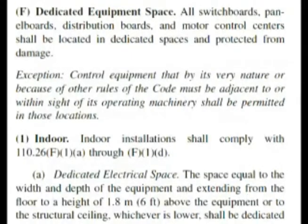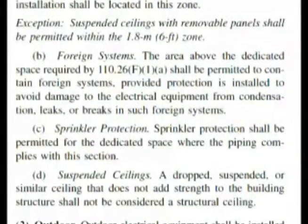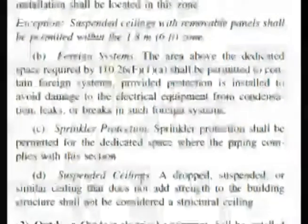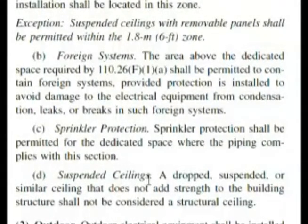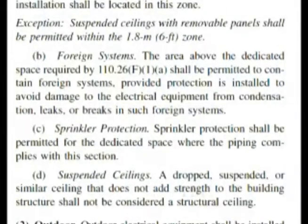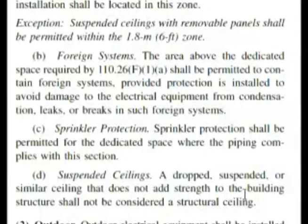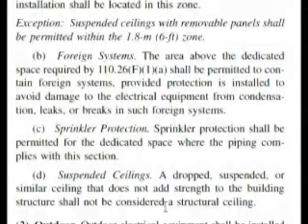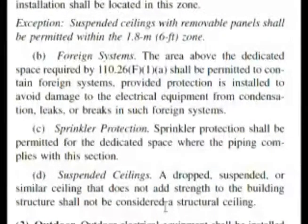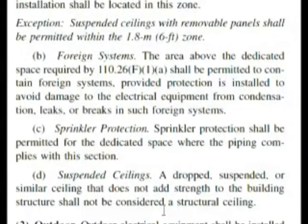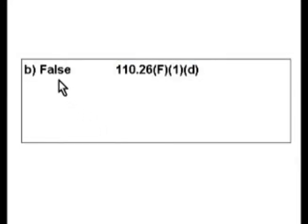We find here dedicated equipment space, and our question starts off with the dedicated space above a panel board, so this looks like a good place. Now we start going through these smaller italic headings. We find subsection D, suspended ceilings: a dropped, suspended, or similar ceiling that does not add strength to the building structure shall not be considered a structural ceiling. The statement in the question said it was considered a structural ceiling, but the code says it shall not be considered a structural ceiling. This makes the answer to question 74 false, which is choice B.